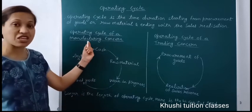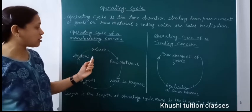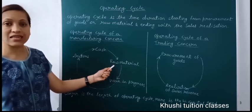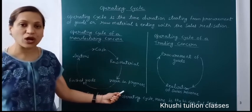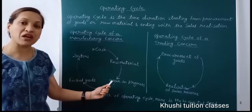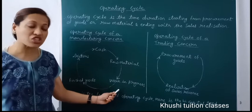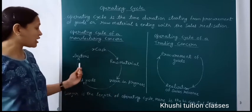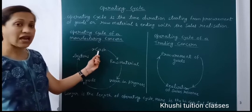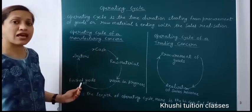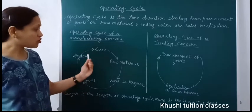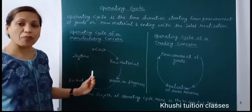First we see the operating cycle for a manufacturing concern. In any manufacturing organization, first we purchase raw material with cash. Then processing starts on this raw material and it converts into work in progress — material on which production has started but has not yet become finished goods. When it converts, it becomes finished goods. If we sell finished goods on credit, debtors are generated. When we receive cash from these debtors, it converts to cash. If we sell finished goods for cash, debtors are not generated — it directly converts to cash.